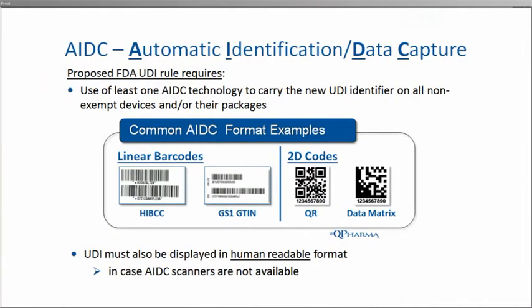AIDC is the carrier or label that displays or transmits the UDI data to scanning or radio technology. Common AIDC formats in use today are linear or 1D barcodes, like the HIBCC and GS1 codes on the left, and 2D codes like QR and data matrix on the right. Radio Frequency Identification, or RFID tags, are also expected to be an acceptable format for Automatic Data Capture. But since the final rule is expected to call for labels that are human-readable, if you use RFID, there still will have to be a human-readable label in case scanning or RFID reading tools are unavailable.